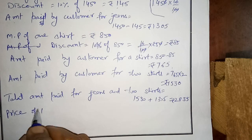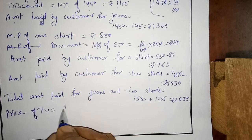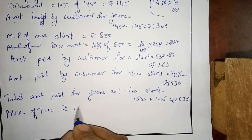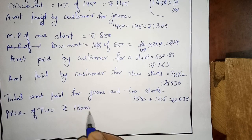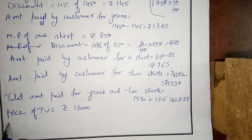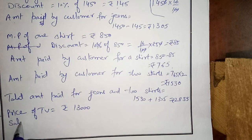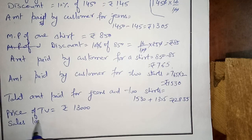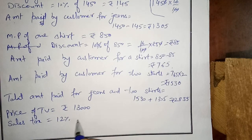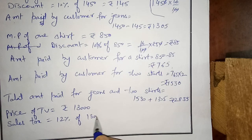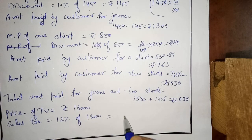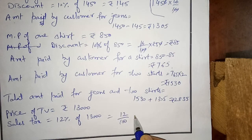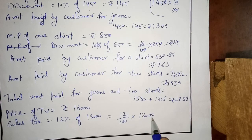Price of TV is equal to Rs. 13,000. Sales tax is 12% of Rs. 13,000. So: 12/100 multiplied by 13,000.